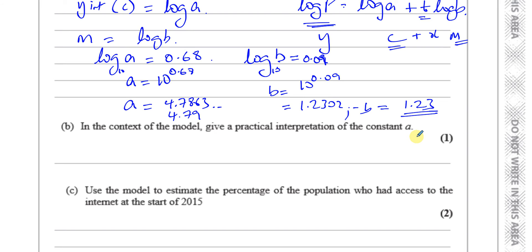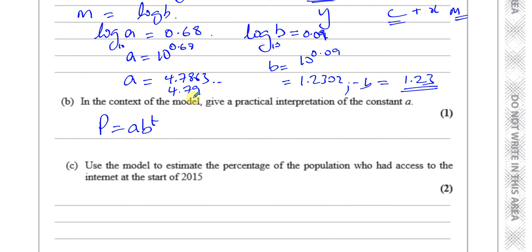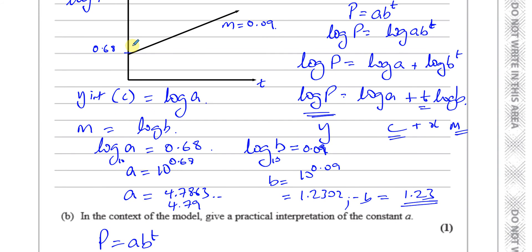Then it says, in the context of the model, give a practical interpretation of the constant A. So we know that we've got P equals A times B to the power of T, and P is the percentage of the population that has access to the internet after T years from 2005.